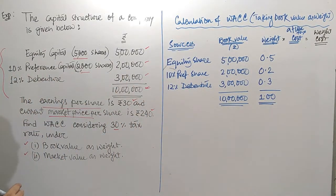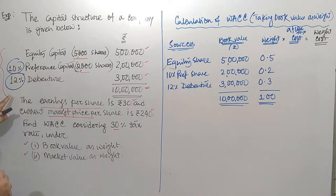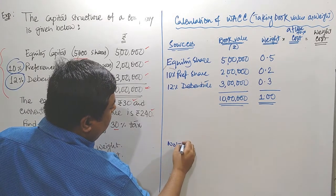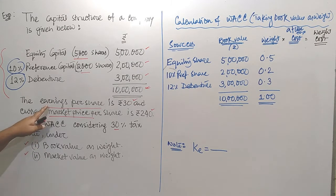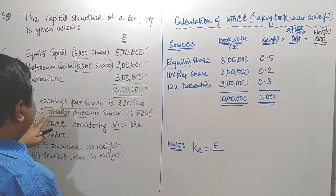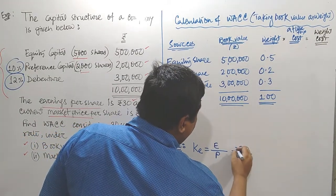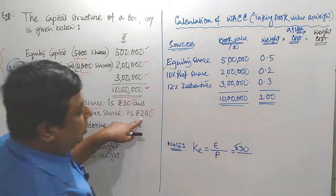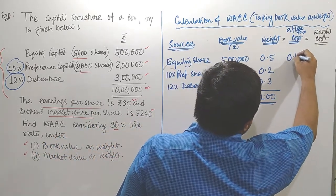Now we have to calculate the after-tax cost for each component. For equity share, no specific cost is directly available, but for preference and debenture it is 10% and 12% respectively. For equity share capital, we use the formula: E divided by P plus G. EPS (E) is available as 13 rupees and market price per share (P) is 240 rupees. G is not available, so we ignore it. The cost of equity is 0.125 or 12.5%.